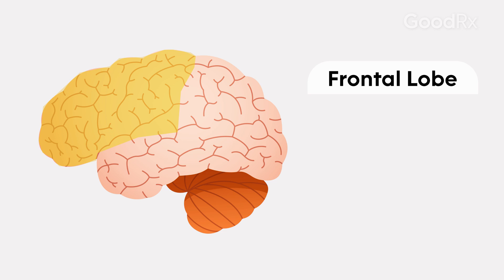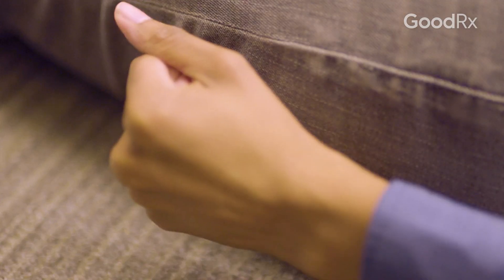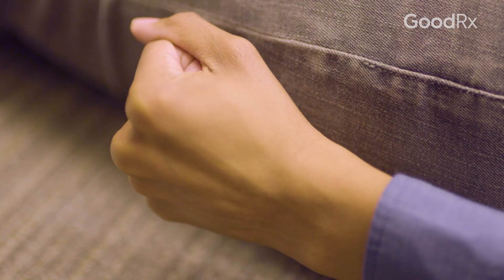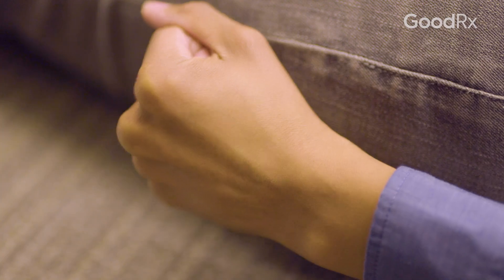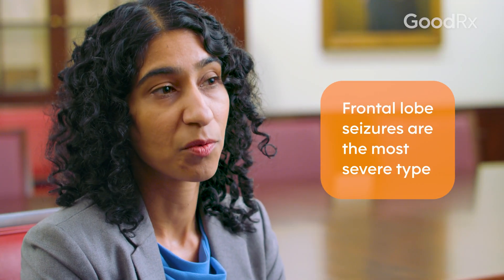If it occurs in areas called the frontal lobes, where motor or movement is located, you may have shaking movements of one arm or one leg, or a convulsion where there are violent movements of the hands and the feet. That's the most severe form of seizure.